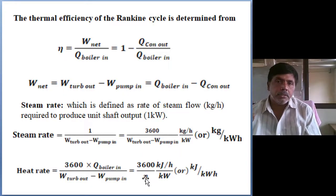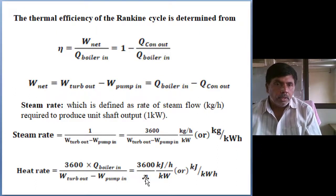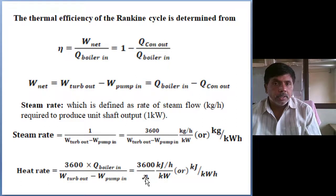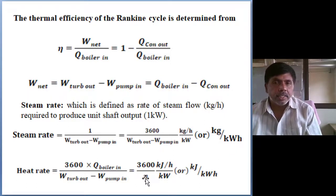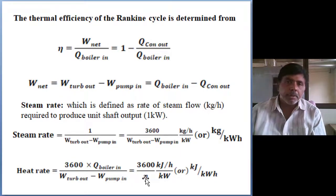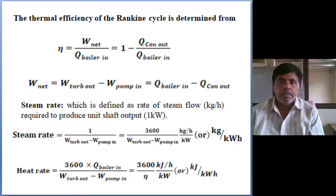So finally, three methods to enhance the Rankine cycle efficiency: the first method is to reduce the condenser pressure; the second is to superheat the steam in the boiler; and the third is to raise the pressure of the boiler — but to take advantage of raising the boiler pressure, we have to introduce reheating. Next class we will discuss further methods. With this I am ending today's session. Thank you.